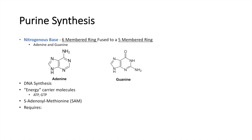Purine synthesis requires several things, just like pyrimidine synthesis does. It requires glutamine and glycine — this is a big difference between purine and pyrimidine synthesis, in that purines require glycine for their synthesis. Purines also require aspartate and tetrahydrofolate, vitamin B9, just like pyrimidine. So vitamin B9 is very important for both purine and pyrimidine synthesis.